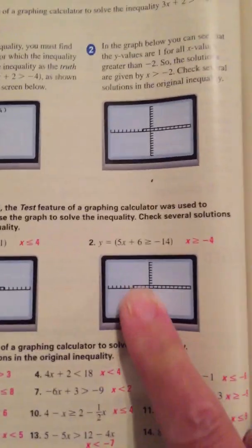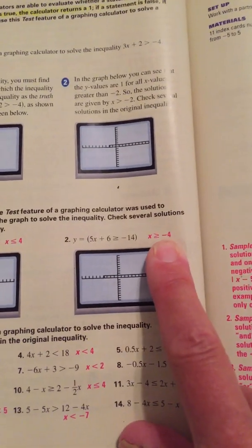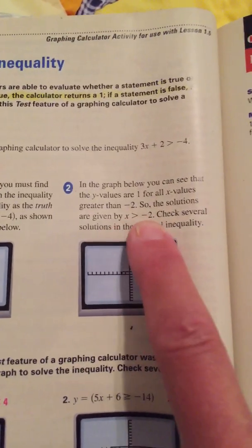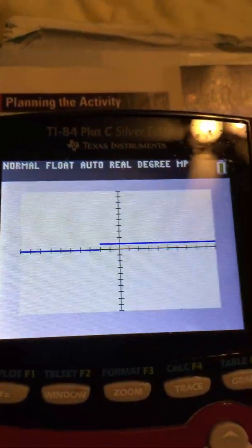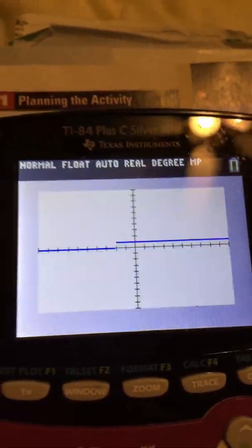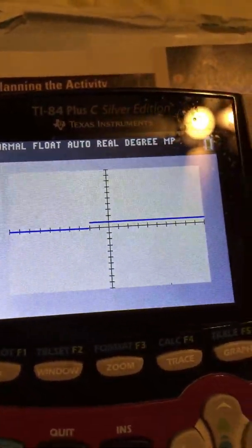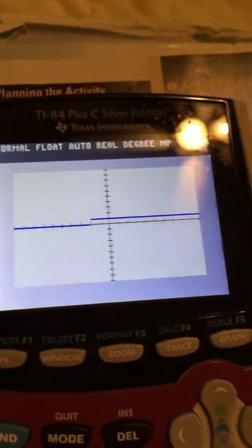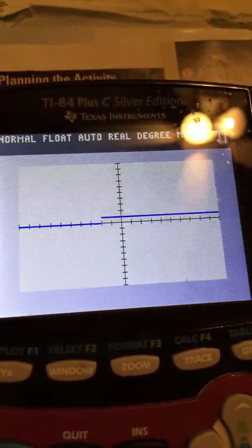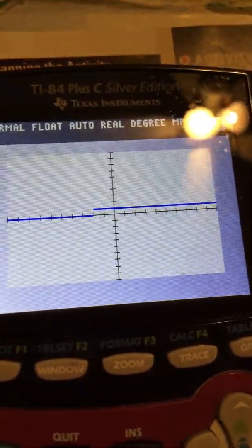So the answer to our equation, if we look over here at the book, down here, it tells us that the answer is, that's not that one. It's this one up here. X is greater than negative 2. So this is really more of a checking feature because you can't tell if it's greater than or equal to or greater or less than or equal to.